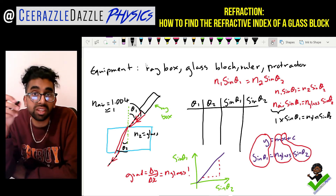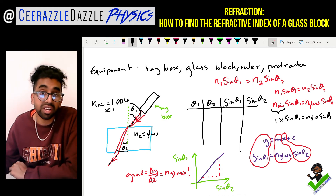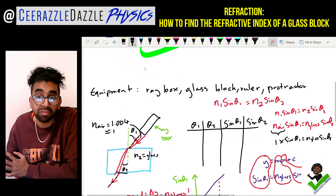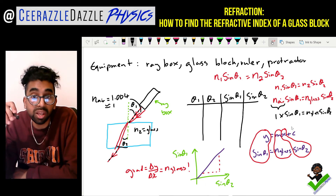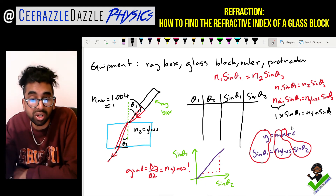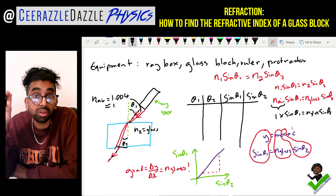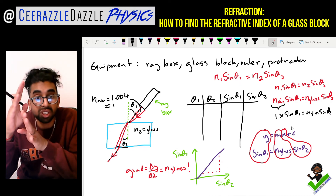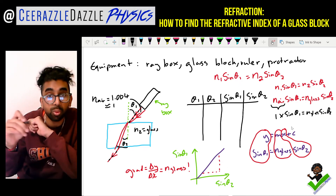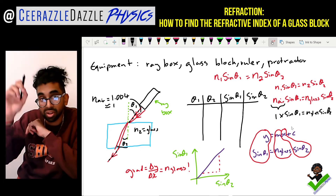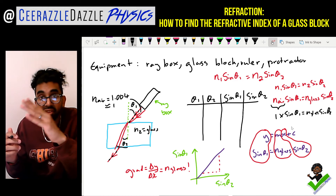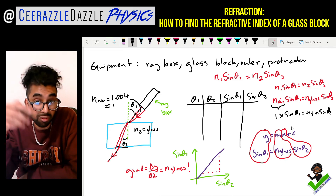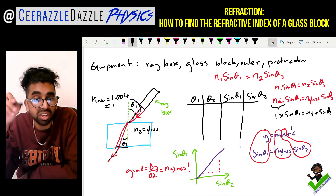Today's task was to find the refractive index of a glass block using the graphical method. The equipment needed was a ray box, glass block, ruler, and protractor. We place the glass block on paper, shine the ray box on it, change the angle of incidence, mark where the ray exits, remove the glass block, connect the line, and then measure θ1 and θ2. The table has columns for θ1, θ2, sine θ1, and sine θ2.